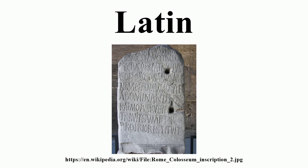Literature: The works of several hundred ancient authors who wrote in Latin have survived in whole or in part, in substantial works or in fragments to be analyzed in philology. They are in part the subject matter of the field of classics. Their works were published in manuscript form before the invention of printing and now exist in carefully annotated printed editions such as the Loeb Classical Library, published by Harvard University Press, or the Oxford Classical Texts, published by Oxford University Press.